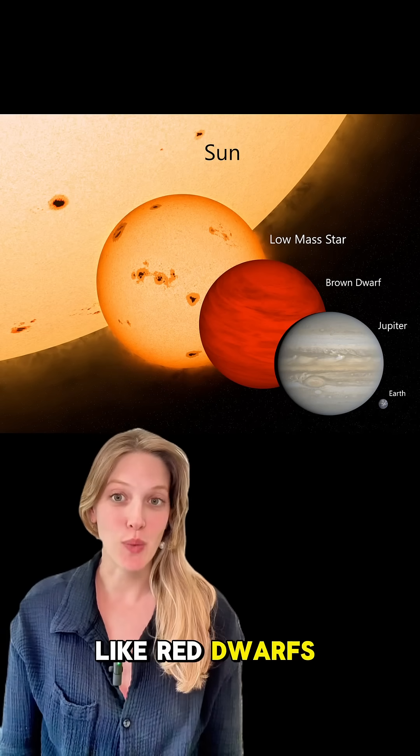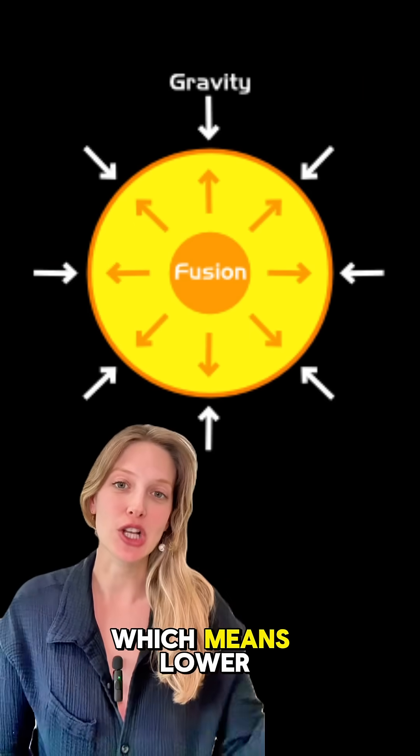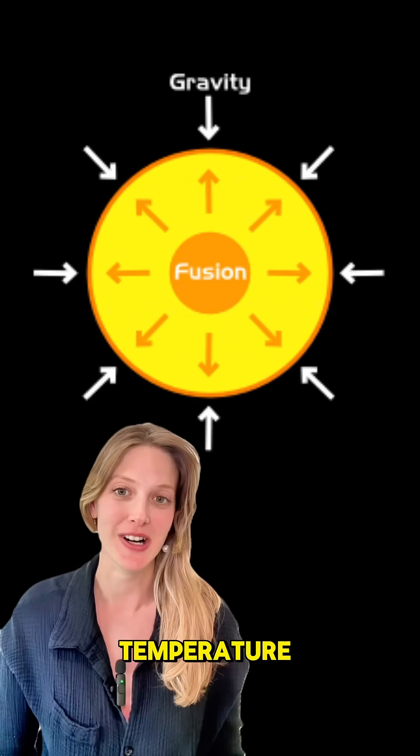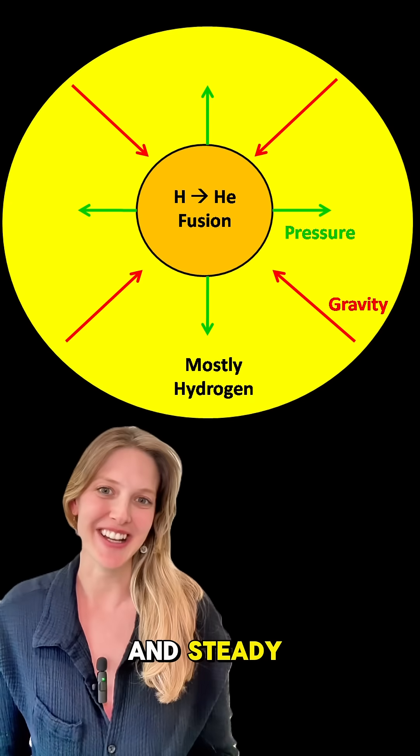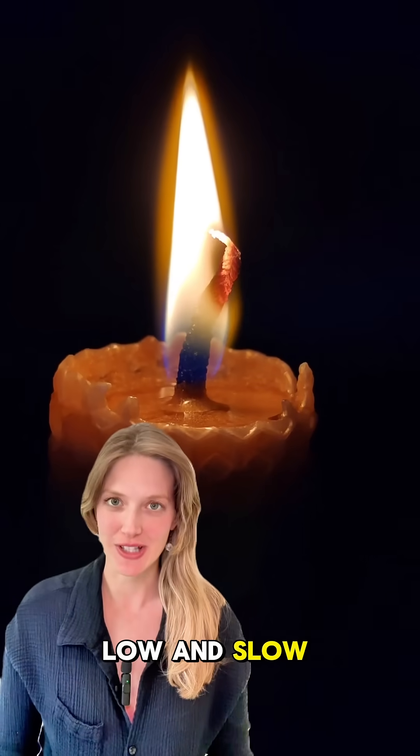Lower mass stars like red dwarfs have weaker gravity, which means lower core pressure and temperature. This keeps their nuclear fusion slow and steady, kind of like a candle burning low and slow.